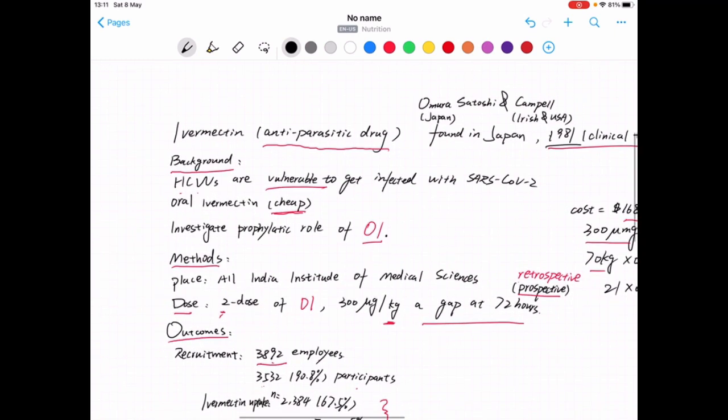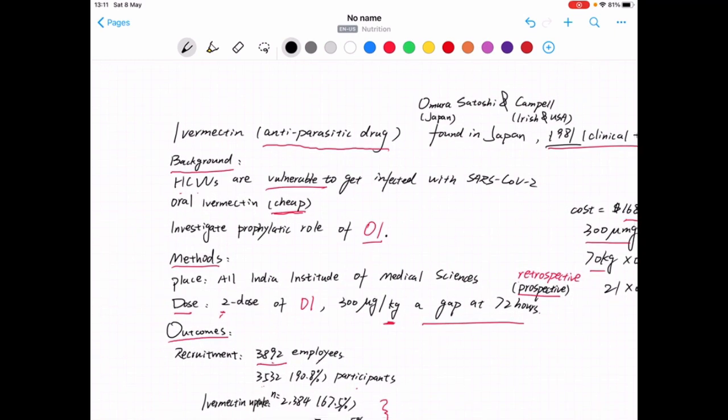So the background story mentioned in the journal is that healthcare workers are vulnerable to get infected with COVID-19. So the scientists are thinking about whether oral Ivermectin is a cheap prophylaxis drug for COVID-19.